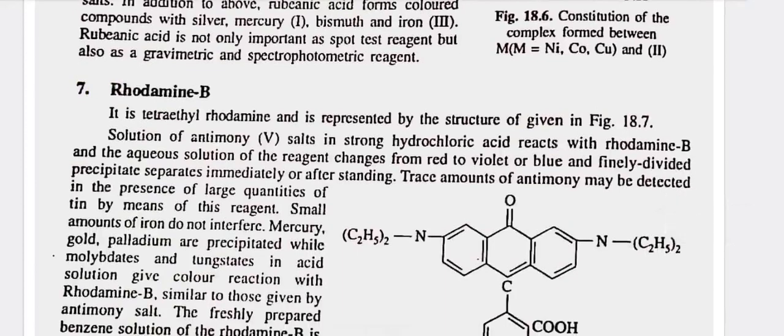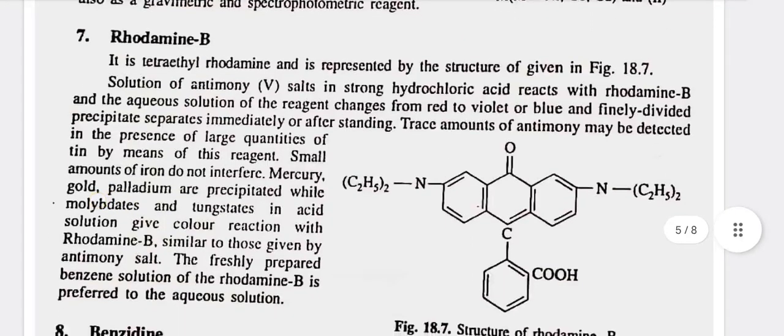Seventh, rhodamine B — it is a tetraethyl rhodamine and is represented by the structure given in figure 18.7. Solution of antimony(V) salts in strong hydrochloric acid reacts with rhodamine B, and the aqueous solution of the reagent changes from red to violet or blue, and finely divided precipitate separates immediately or after standing. Trace amounts of antimony may be detected in the presence of large quantities of tin. By means of this reagent, small amounts of iron do not interfere. Mercury, gold, and palladium are precipitated, while molybdates and tungstates in acid solution give a color reaction with rhodamine B, similarly to those given by antimony salts.